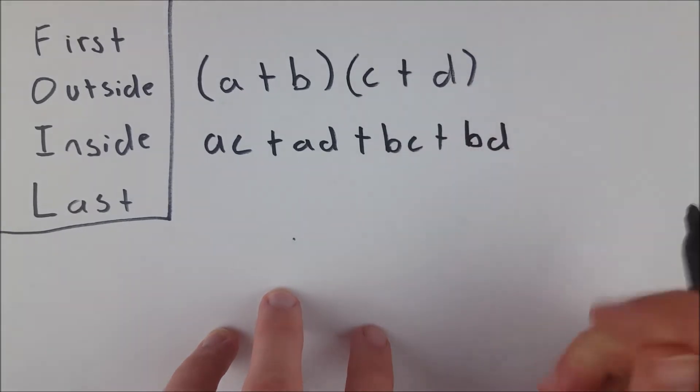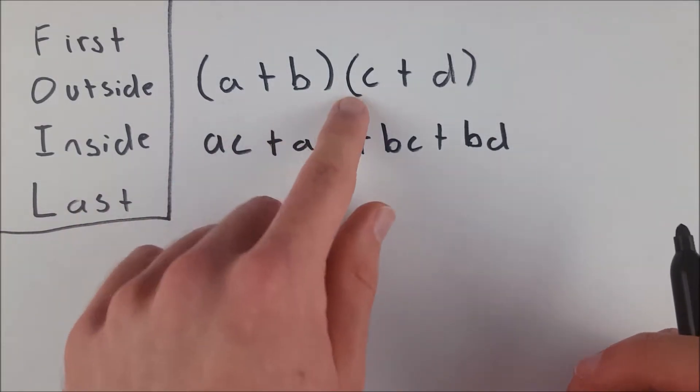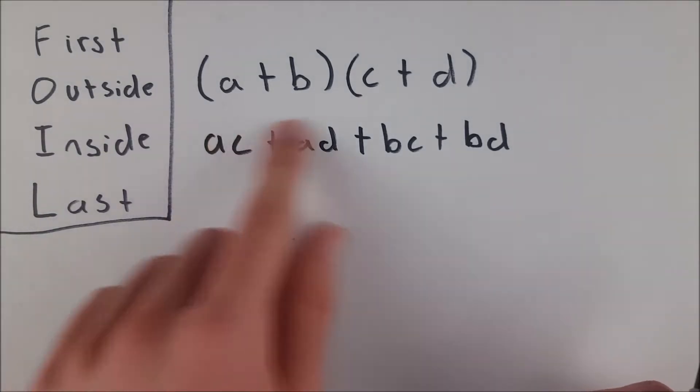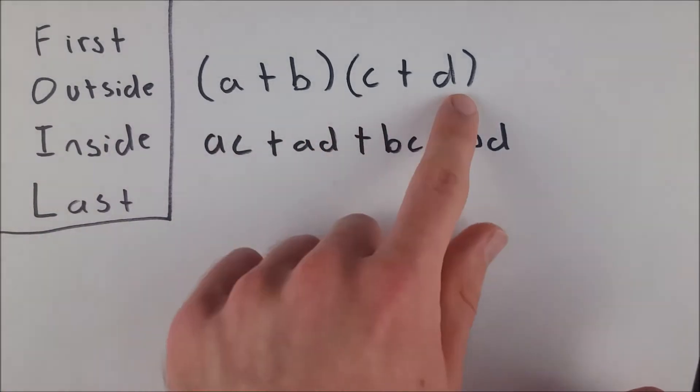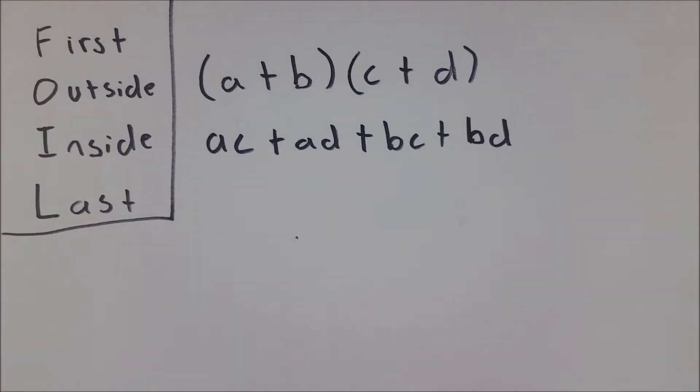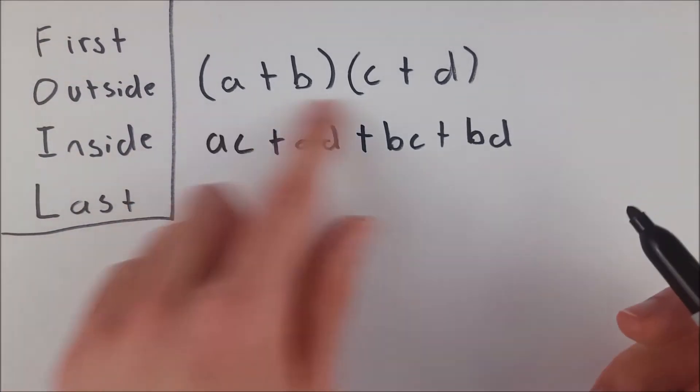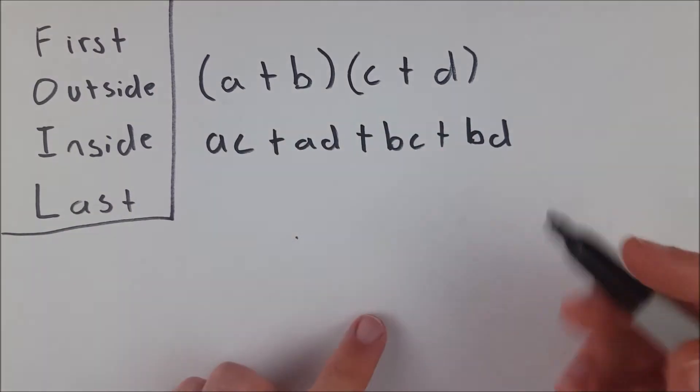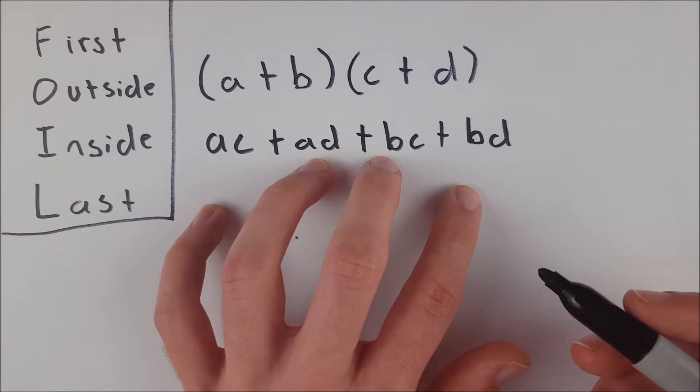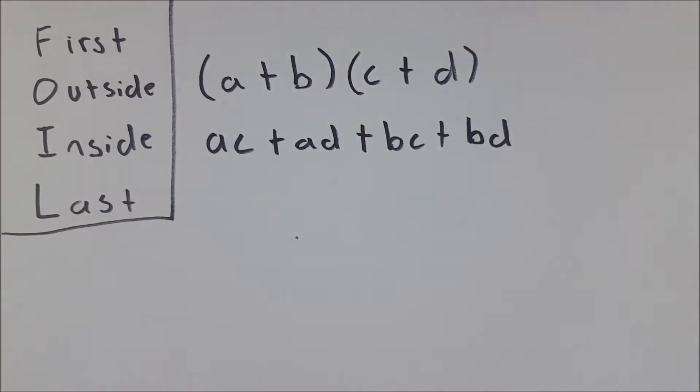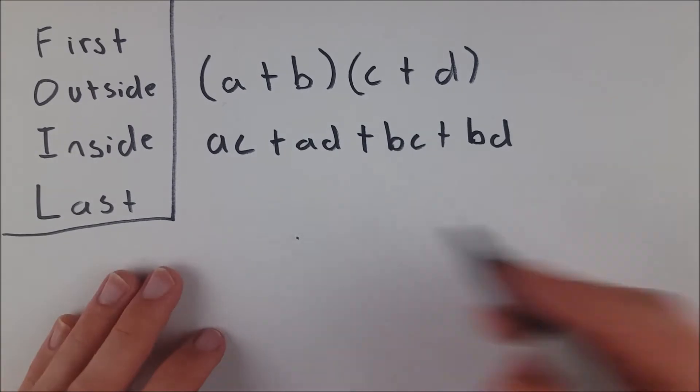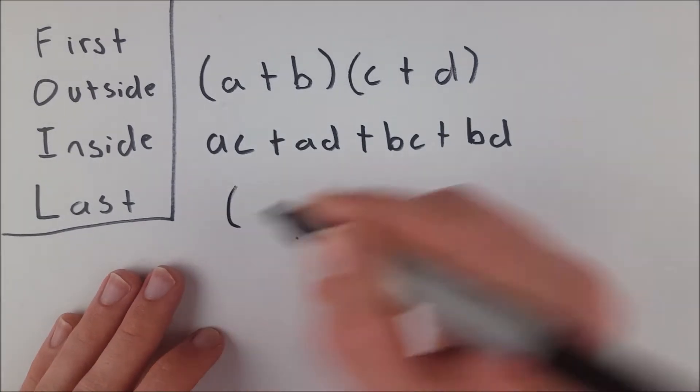Now we have fully distributed this binomial through this binomial. That's really all FOIL is—taking one binomial and distributing it through another binomial. However, it's handy because people often forget to do all of this multiplication properly. People often miss one or two steps because there are four steps, so it's easy to forget one. It's easy to forget to multiply your b times your c or your b times your d. Let's look at a real example.